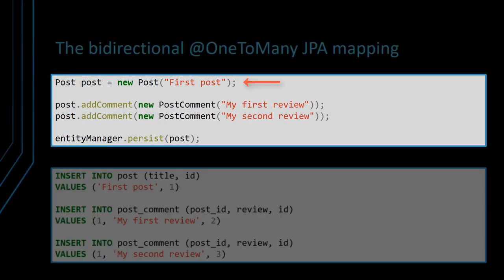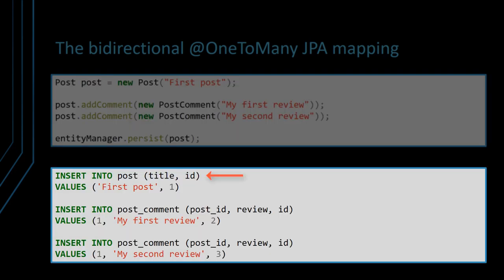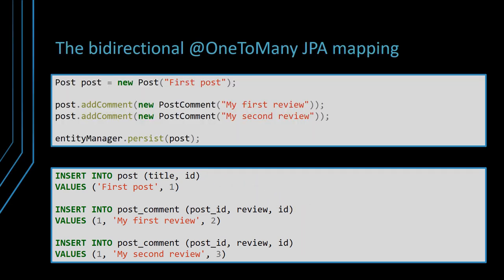When persisting one post entity along with two associated post comment child entities, because we declare the cascade attribute to CascadeType.ALL on the one-to-many annotation, Hibernate is going to execute one insert statement for the post table and two insert statements for the post comment table. Notice the use of the addComment utility method, which sets both sides of this bidirectional one-to-many JPA relationship.